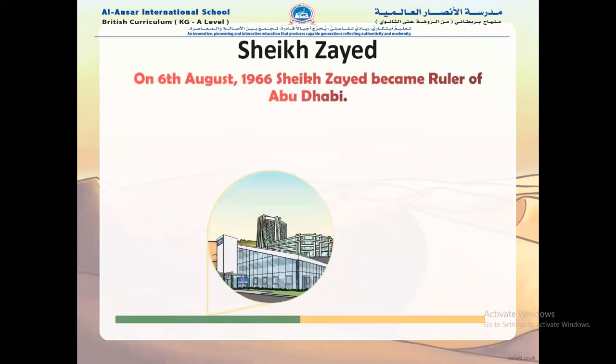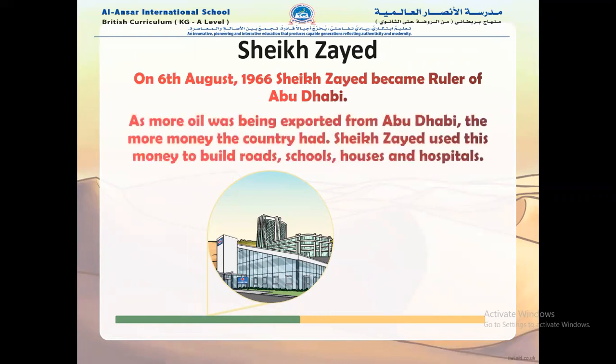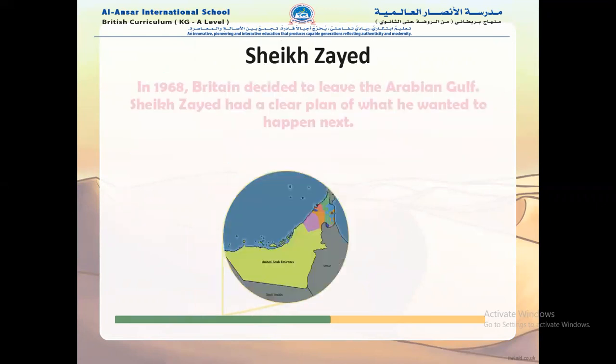On 6th August 1966, Sheikh Zayed became ruler of Abu Dhabi. As more oil was being exported from Abu Dhabi, the more money the country had. Sheikh Zayed used this money to build roads, schools, houses, and hospitals.